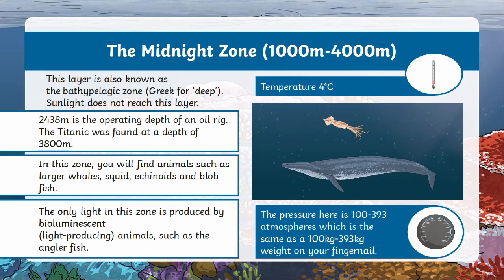If you go a little bit deeper, we reach the midnight zone. This is between 1000 and 4000 meters below the surface and the temperature here is even colder at 4 degrees Celsius. This layer is also known as the bathypelagic zone, which is Greek for deep, and sunlight doesn't reach this layer so it's very dark. 2438 meters is the operating depth of an oil rig, and the Titanic was found at a depth of 3,800 meters. In this zone you will find animals like larger whales, squid, and blobfish. The only light in the zone is produced by bioluminescent animals who produce their own light, for example the anglerfish.